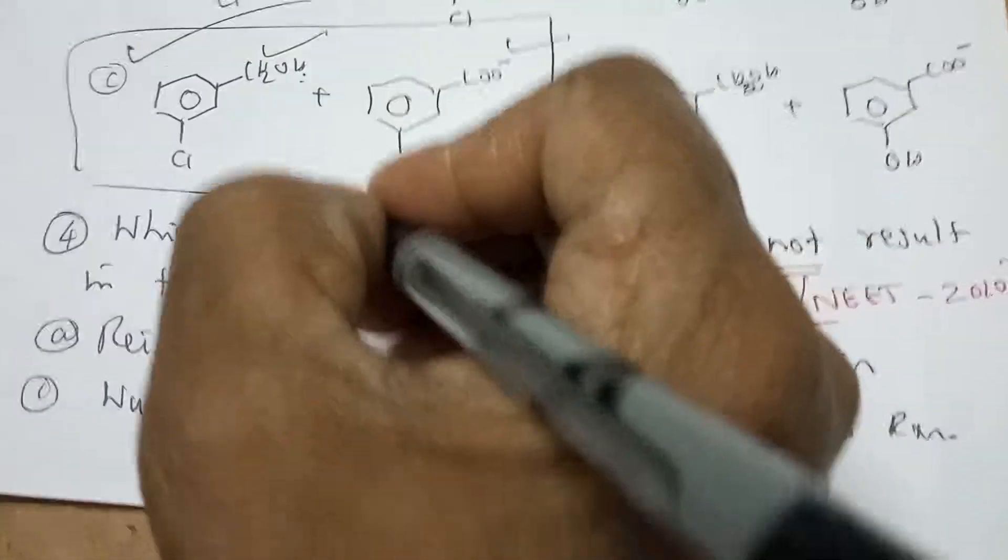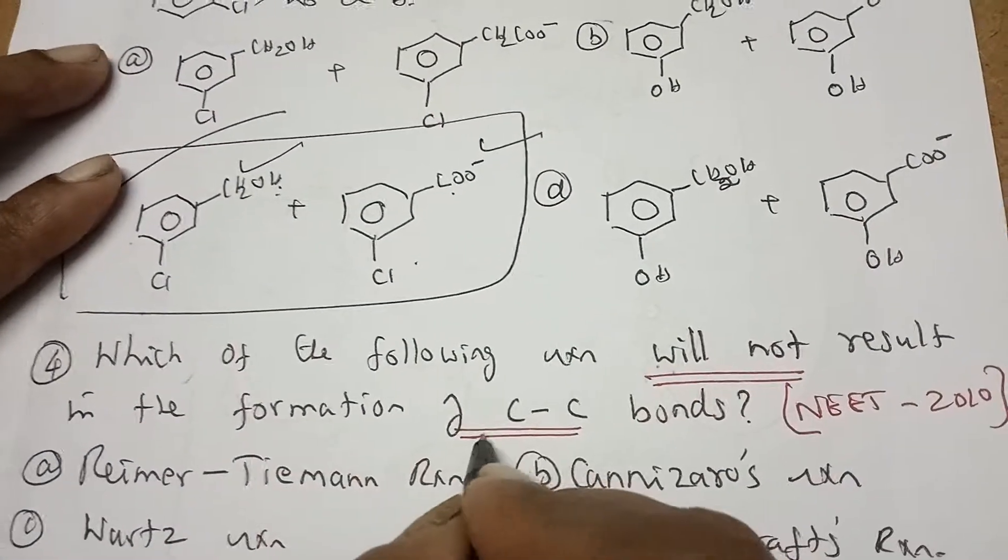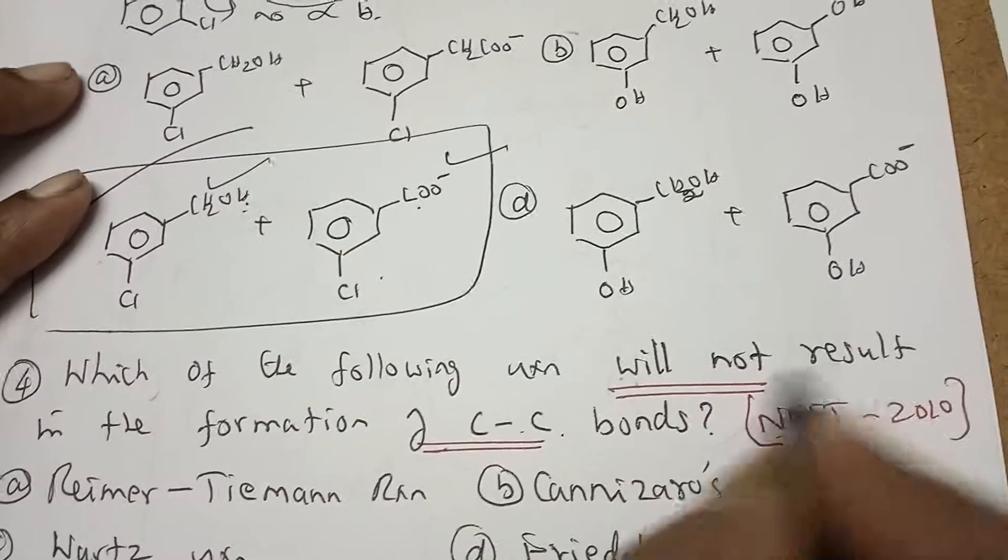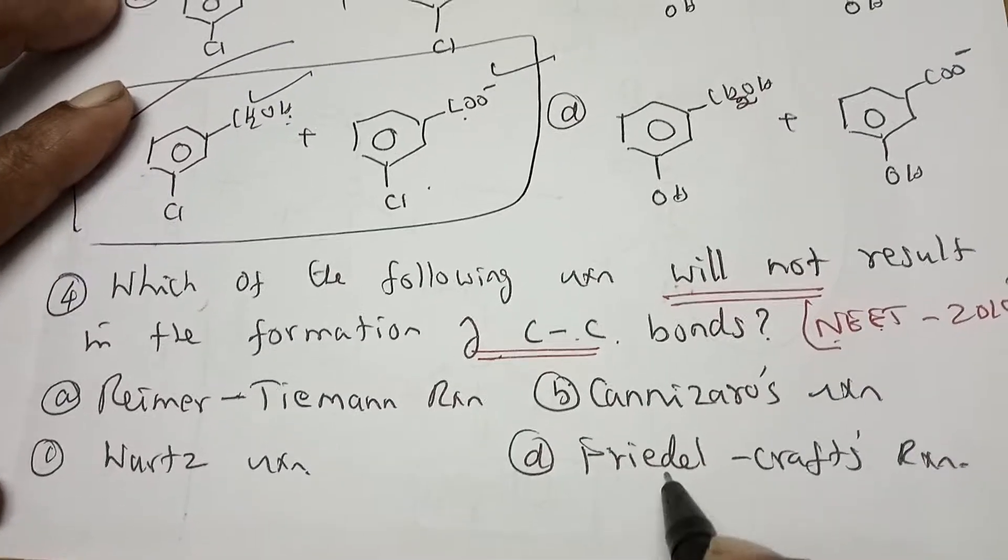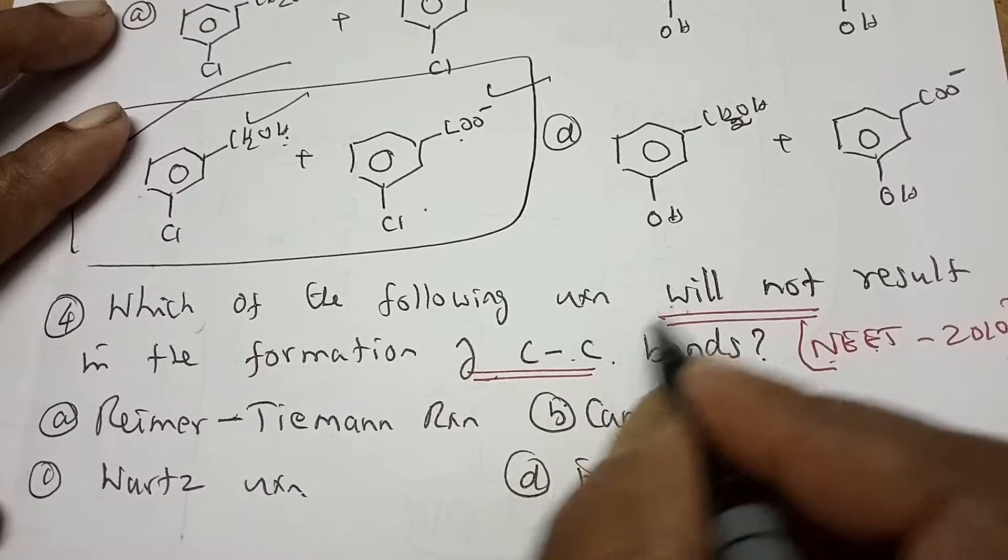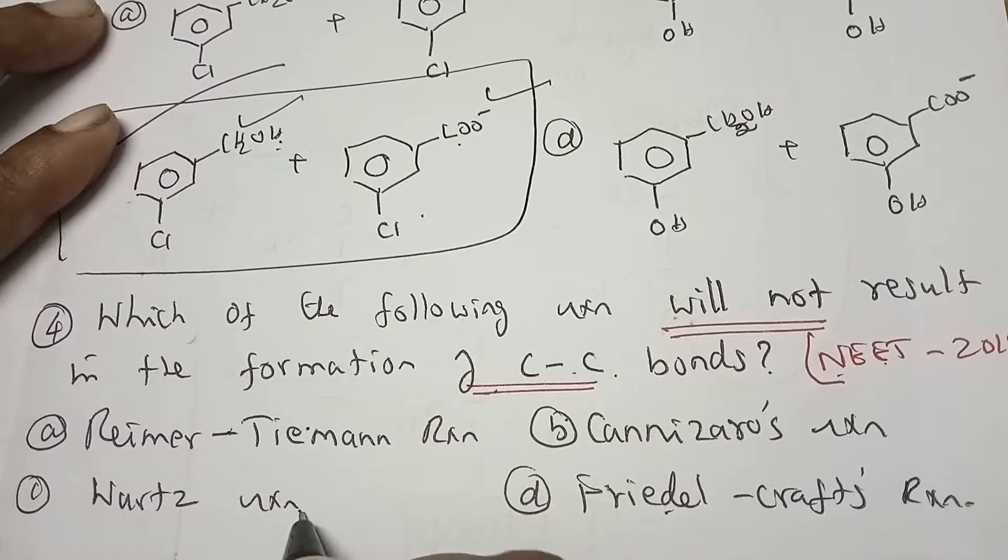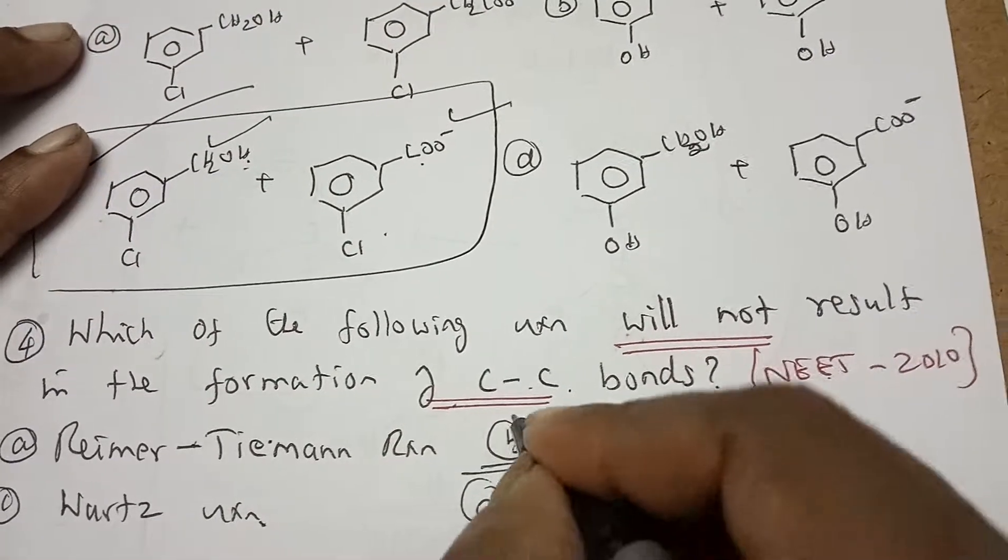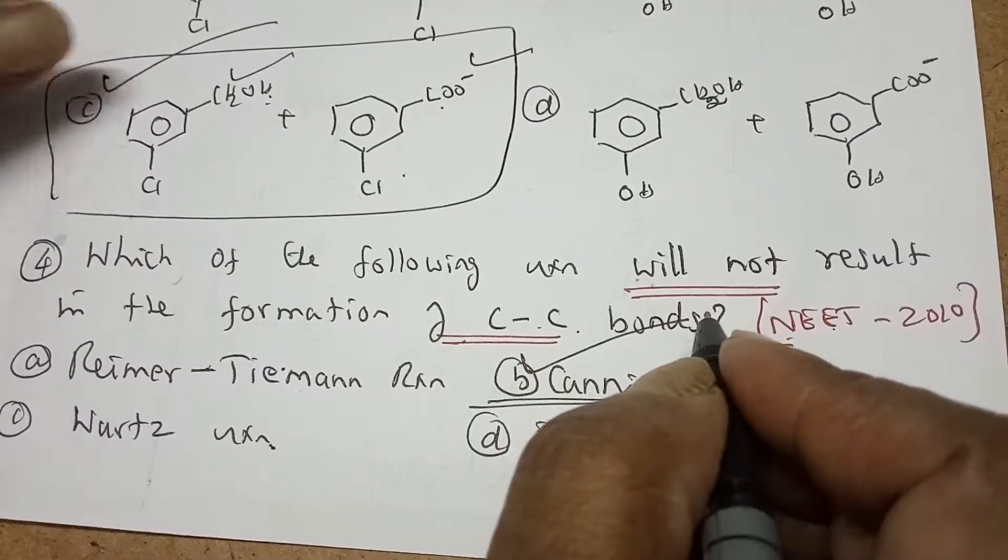Now let us go to the next question. And the last one is, which of the following reaction will not result in the formation of carbon-carbon bond, NEET 2010? Very important knowledge, here four name reactions are available: Reimer-Tiemann reaction, Cannizzaro, Wurtz reaction, Friedel-Crafts. Where the C-C bond is not forming? In the Reimer-Tiemann it is forming, in the Wurtz reaction it is forming, Friedel-Crafts it is forming. So not forming means the Cannizzaro reaction where you are not having formation of new carbon-carbon bond.